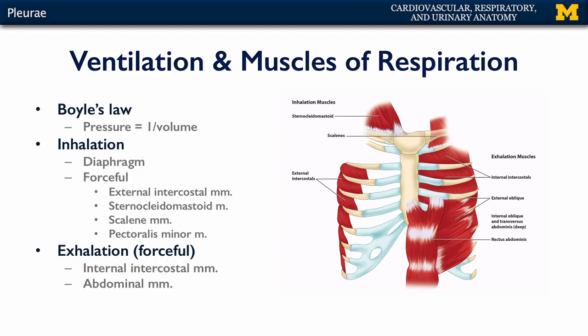You can also have forceful inhalation, which brings a couple of other muscles to bear. Namely, there are external intercostal muscles on the ribs. If you were to put your hands on your ribcage and take a very deep breath in, you'd be able to feel your ribs expand outwards. That expansion outwards is due to these external intercostal muscles.